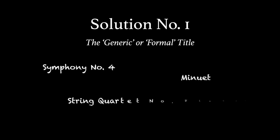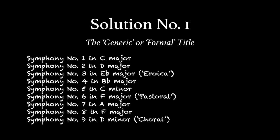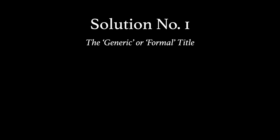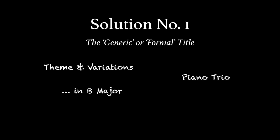Symphony Number Four. Minuet. String Quartet Number Eight in C Minor. Classical music is full of such titles. They have been used for centuries and are very handy in organising a composer's output. We know that Beethoven wrote nine symphonies, for example, so we can mention Beethoven's Fifth and there's a good chance people will know what you're talking about without even mentioning the word symphony. These kinds of titles are extremely common and can inform you of the form, instrumentation, key, and sometimes character of a composition. They are also extremely easy to come up with, as no imagination is necessary.